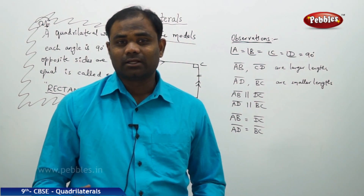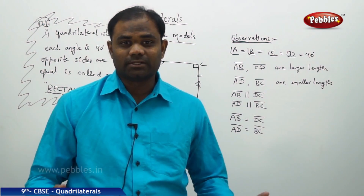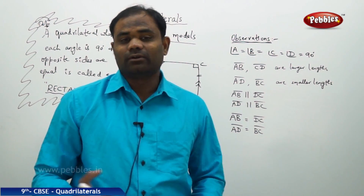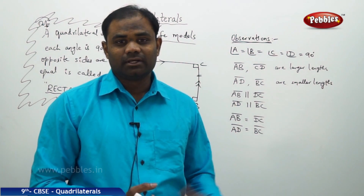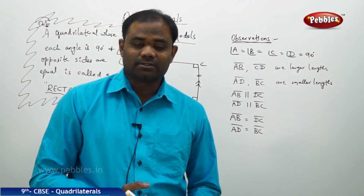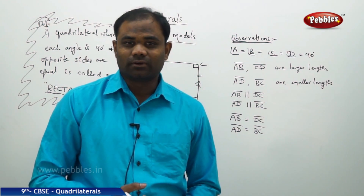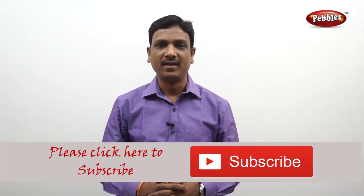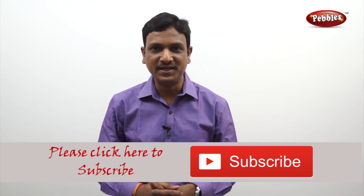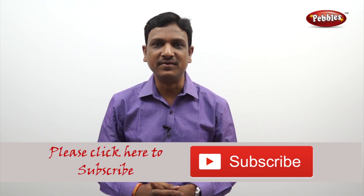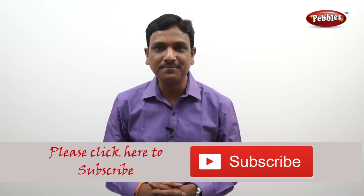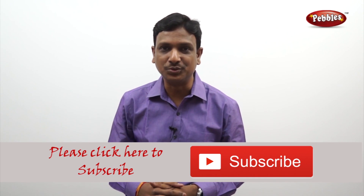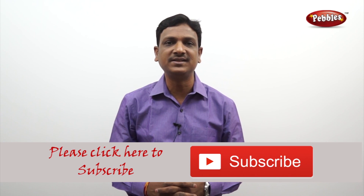To summarize the special cases of a quadrilateral: all four sides equal and each angle 90° is a square; all four sides not equal but opposite sides equal and each angle 90° is called a rectangle. These are special cases of a quadrilateral. If you like this video, please give a thumbs up and subscribe to our channel for more videos.